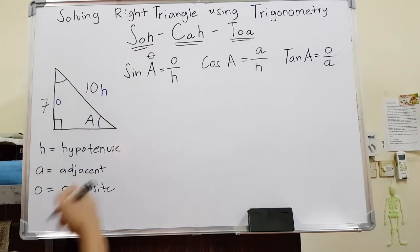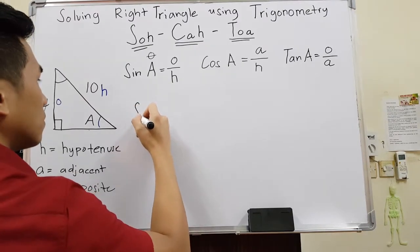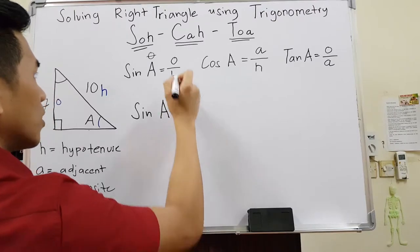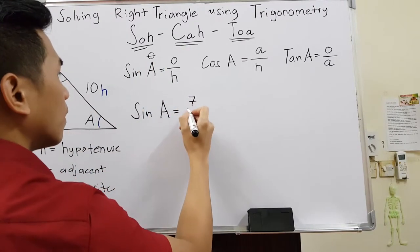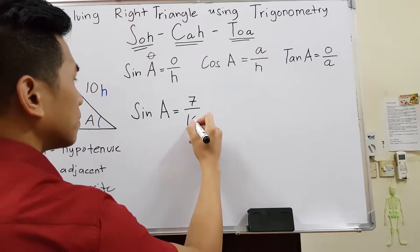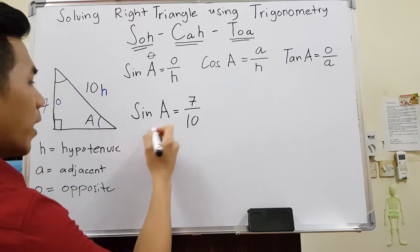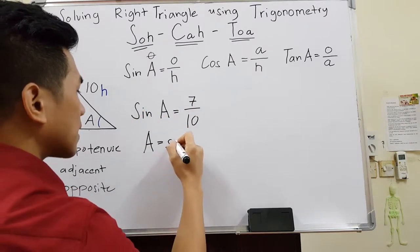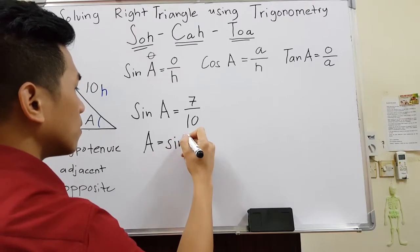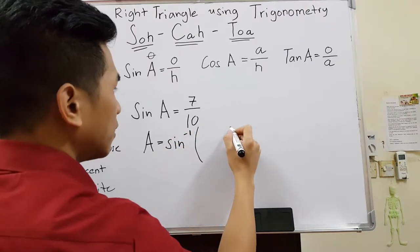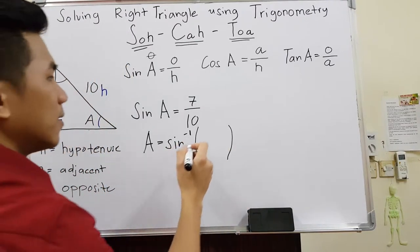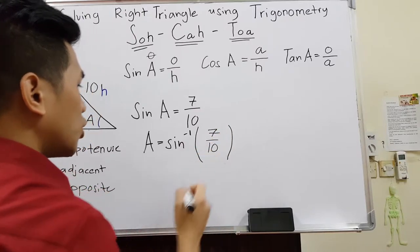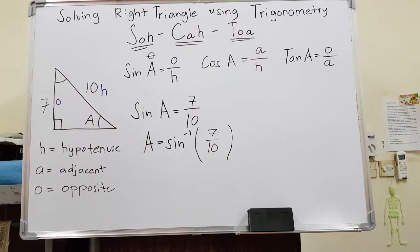Write it out: sine of angle A equals opposite over hypotenuse, which is 7 over 10. To solve for A, use sine inverse. You will see this symbol on your calculator — it's above the sine button. So A equals sine inverse of 7 over 10. Put it in the calculator and you will get the answer.